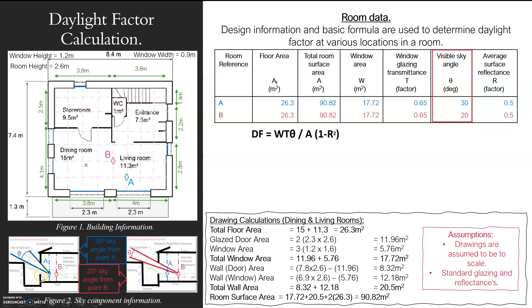There's a building in the way here. That's the externally reflected component that will come in from the building. However, we're looking for how much actual skylight is coming in - that's what we call sky components. That's your visible angle of sky.